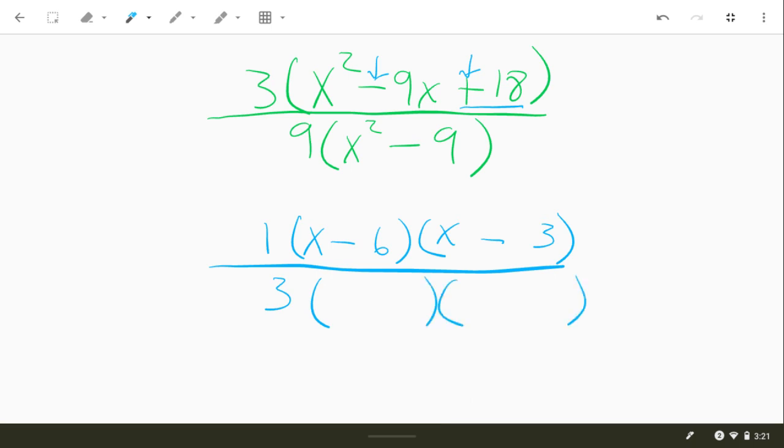And then x squared minus 9, this piece, is going to factor using difference of squares. So x times x gives us x squared, 3 times 3 gives us 9. One plus, one minus.